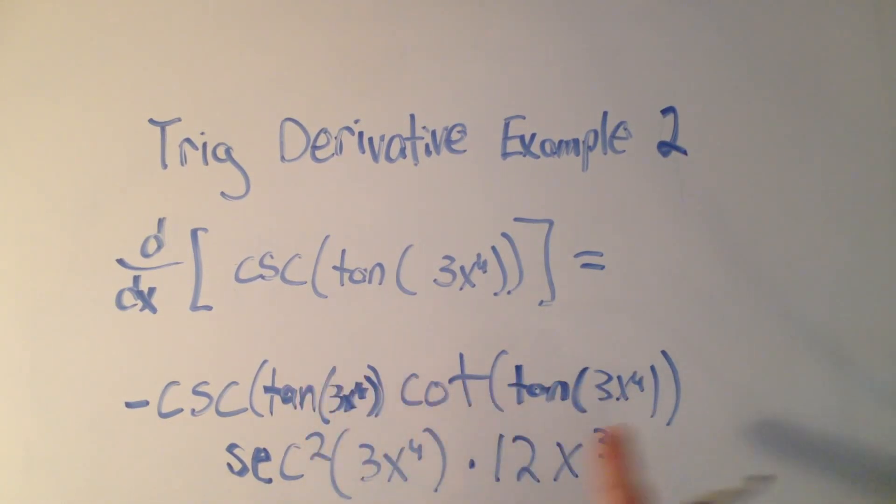So all of this being multiplied together is the derivative of cosecant of tangent of 3x to the fourth. Because the derivative of cosecant is minus cosecant cotangent of whatever is on the inside, and then the derivative of tangent is secant squared of whatever is on the inside times the derivative of the last inside.